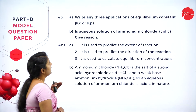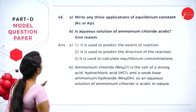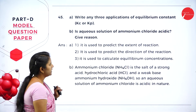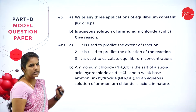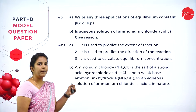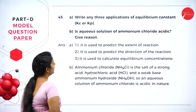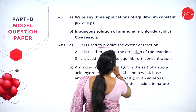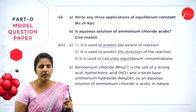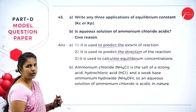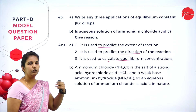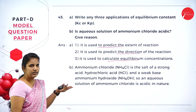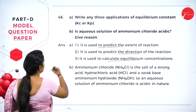Next: Write any three applications of equilibrium constant. The equilibrium constant is used to predict the extent of the reaction, to predict the direction of the reaction, and to calculate the equilibrium concentration. Writing these three applications gives 3 marks.